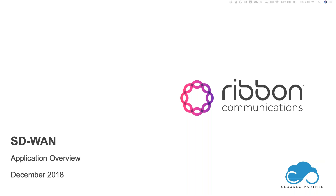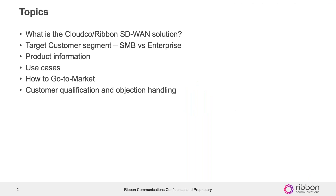Thanks, Danielle. Welcome, everybody. I appreciate you taking this hour to spend with us to understand what the Ribbon and Cloud Co offering is going to be for SD-WAN. To start off with the agenda, we'll discuss a little bit about what the actual offering solution is and focus on the target customer, as the webinar title is SD-WAN for the SMB. We'll get into product information and use cases — the key thing being what business problem are you trying to solve, and for whom are you trying to solve it? That becomes a critical part of your success in adopting SD-WAN and being able to sell it to your customer base.